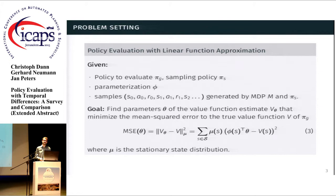and samples from the environment that are generated by the MDP and the sampling policy. And the goal is to find parameters of the value function estimate for this policy that minimizes the mean squared error to the true value function of this policy. And this mean squared error is weighted by the stationary state distribution.